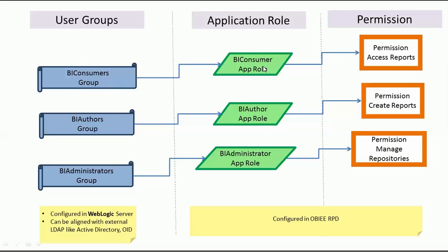Once the user is in, what data they can view is controlled by application roles and permissions, configured in the OBIEE admin tool in the RPD. Application roles are aligned with user groups — there are application roles: BI Consumer, BI Author, and BI Administrator, which align with the BI Administrators, BI Authors, and BI Consumers user groups. Permissions are assigned to these application roles, such as 'manage repositories,' which is assigned only to the administrator role.